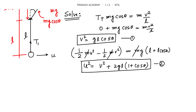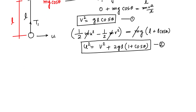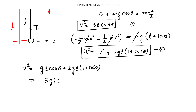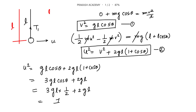Now we solve by substituting equation 1 into equation 2. U² = GL cosθ + 2GL(1 + cosθ), which simplifies to 3GL cosθ + 2GL. With theta = 60 degrees, cosθ = 1/2, so U² = 3GL(1/2) + 2GL = (3/2)GL + 2GL = (7/2)GL.